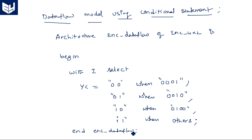If you also have an enable pin for this encoder, you can write a signal assignment statement. Some signal X is assigned with all the output lines; then X is assigned to Y when enable equals one, otherwise Y output equals all zeros. This is the first style — now coming to the second one, behavioral model.